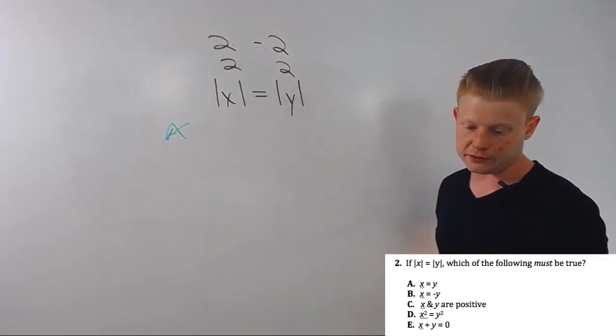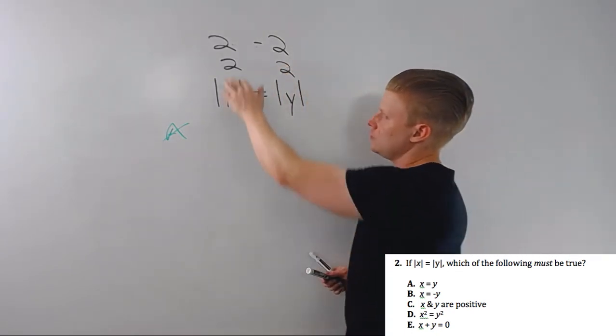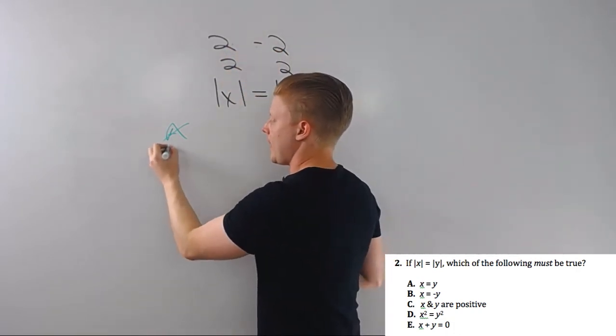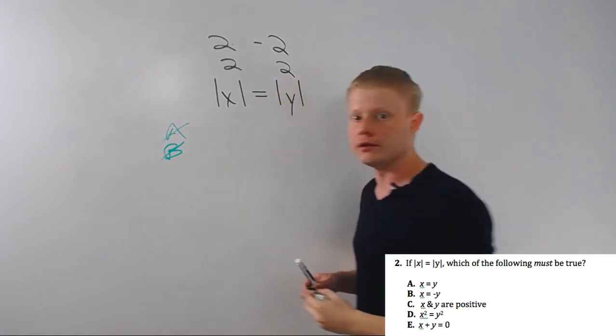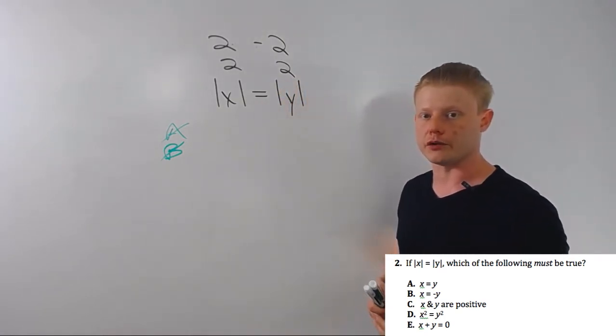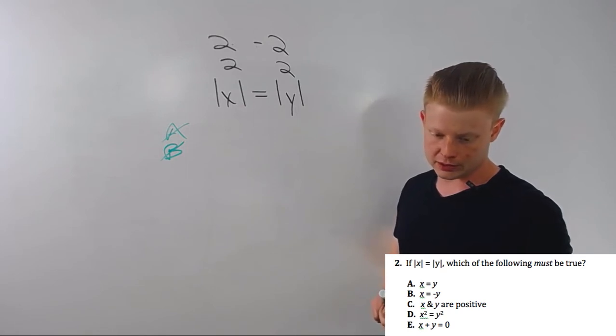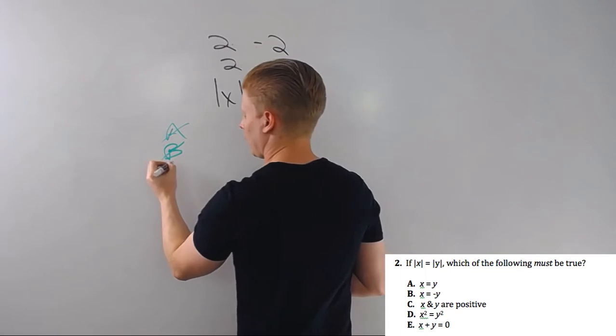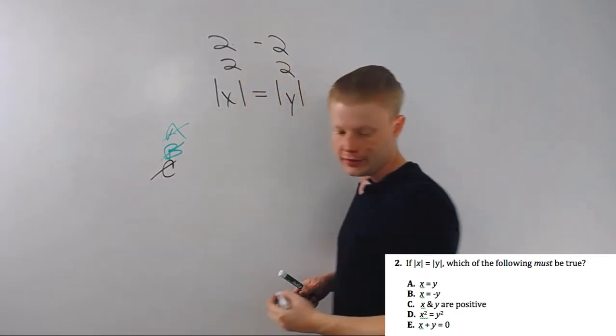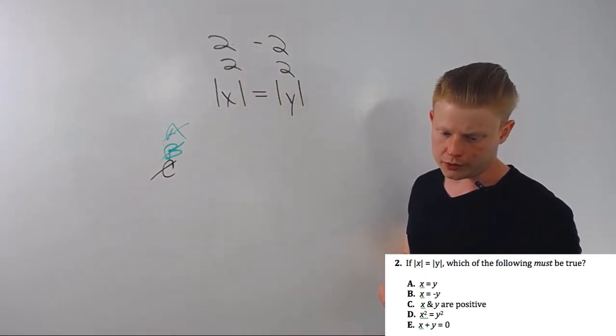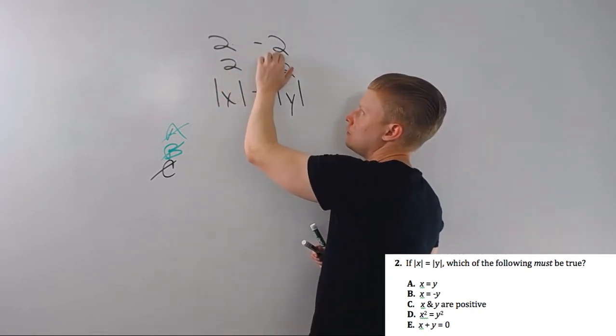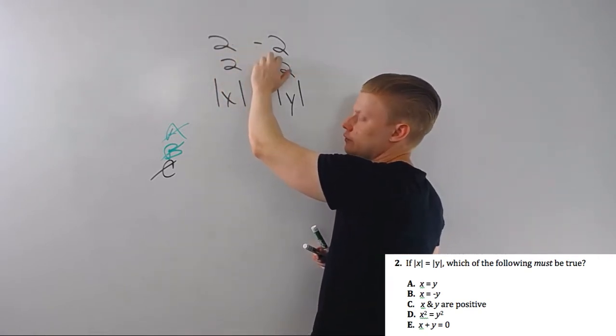But it doesn't have to be. Two is not equal to negative two, so A is out. B: x is equal to negative y. Well that's true here but it's not true here. We don't know that x and y are different. We don't know that they're different numbers. It's a really tricky answer choice right there. X and y are positive? Well in this case they're not, right?